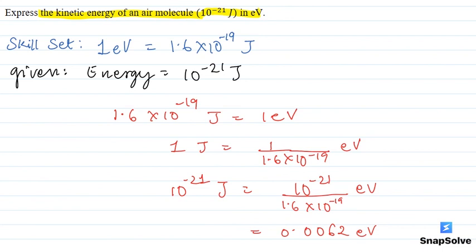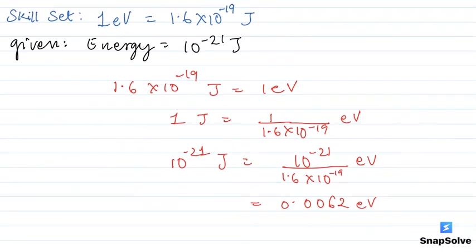So the energy in electron volt — E is equal to 0.0062 electron volt.